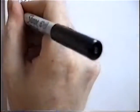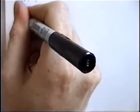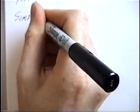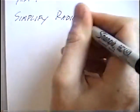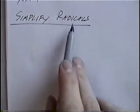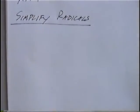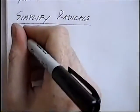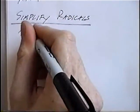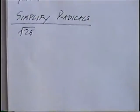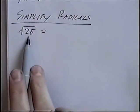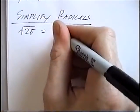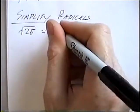The title of the first section of notes is Simplify Radicals. A radical is the same thing as a square root. Our first question is radical 25, or square root of 25. This would be a number times itself that equals 25, and that answer would be 5.